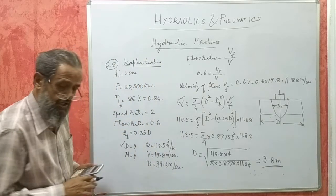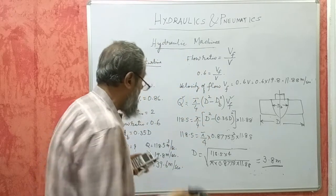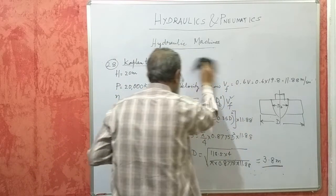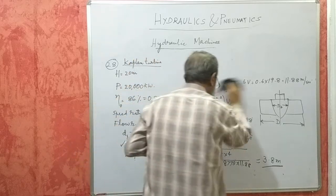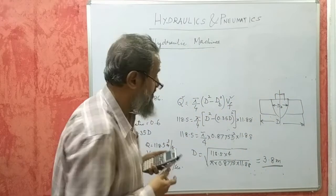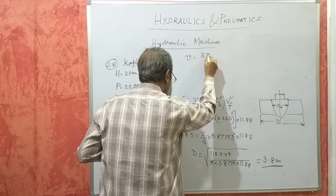Next, we want speed of the runner. To find the speed of the runner, small v, that is velocity of the runner, v is equal to pi d n by 60.